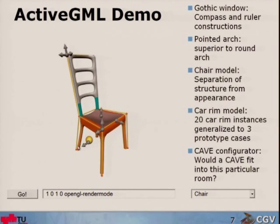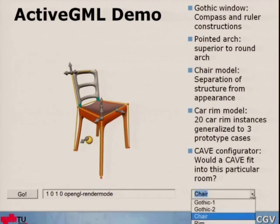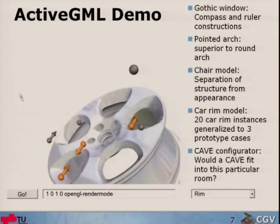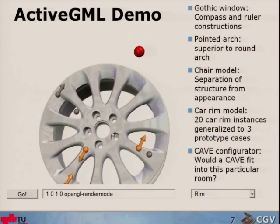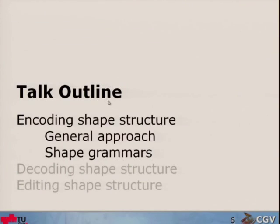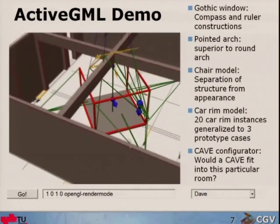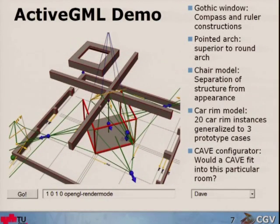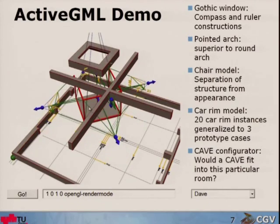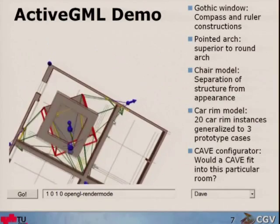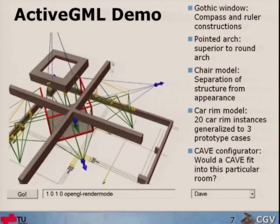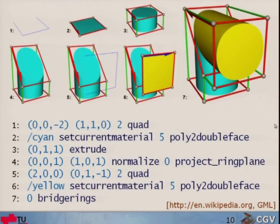Completely different stuff — how do you parameterize a chair? Here are some redundant degrees of freedom of a chair. Then I have this car rim model where you can increase the number of spokes. And finally, we also use this for a cave configurator, which is also a difficult problem. We have this cave actually in Graz, and at one point I was asked how large the mirrors would be to project images. This is what I'm coming from, and this is the Wikipedia page on the generative modeling language.